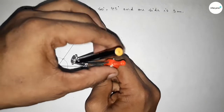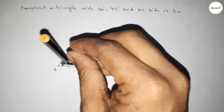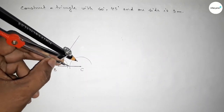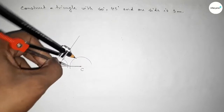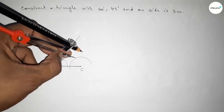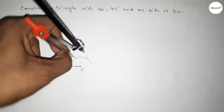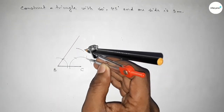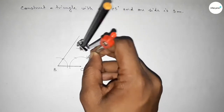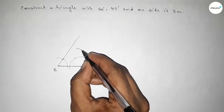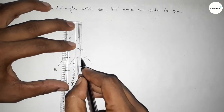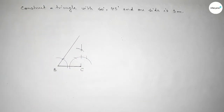Next we have to draw a 45 degree angle on point C. First we have to draw a 90 degree angle, then bisect it. Drawing an arc, putting the compass with same length and cutting here, then putting the compass here and cutting again, drawing an arc. Both curves intersect at a point, joining this line to get a 90 degree angle.